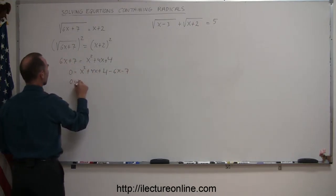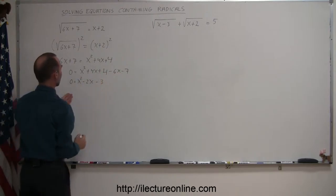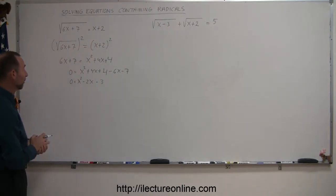Combine like terms, so we have 0 equals x squared, 4x minus 6x is minus 2x, and 4 minus 7 is minus 3. So here you can see now you end up with a quadratic equation, which you have to solve. I think that might be factorable.